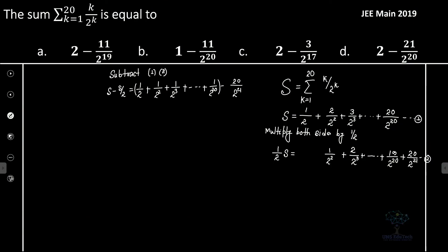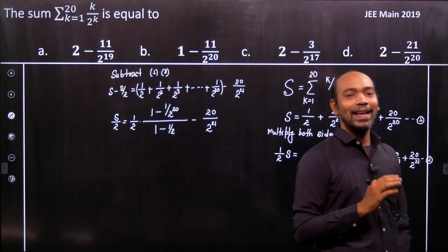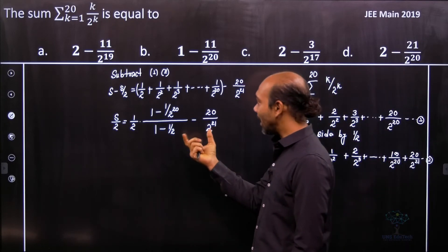So therefore you can see that left hand side s by 2. That's equal to 1 by 2 into 1 minus r and here 1 minus 1 by 2 to the power 20 minus 20 divided by 2 to the power 21. So that's it. So this gives me the exact value.